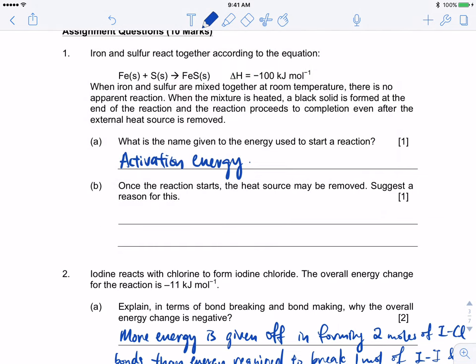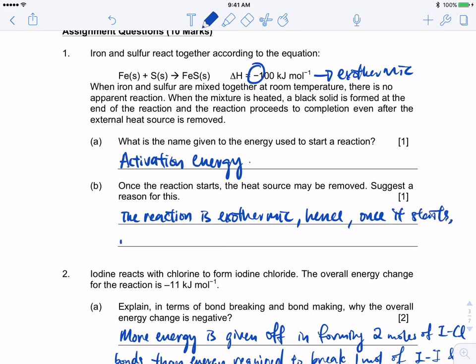Once it starts, the heat source may be removed. Why is this so? We need to look at the delta H. Over here is the negative sign. What does it tell us? It is an exothermic reaction. Once the reaction starts, the reaction is exothermic.